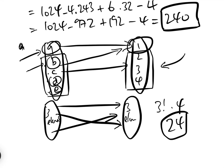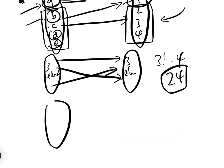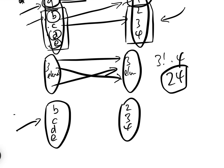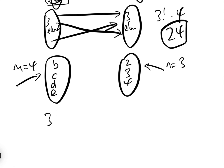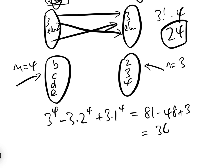Case A: A maps to 1, but B, C, D, and E do not map to 1. So B, C, D, E must map surjectively onto {2, 3, 4} — that's a Stirling problem with m=4 and n=3, which we already computed: 3^4 − 3·2^4 + 3·1^4 = 81 − 48 + 3 = 36.